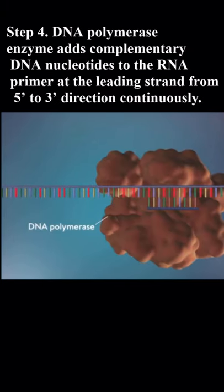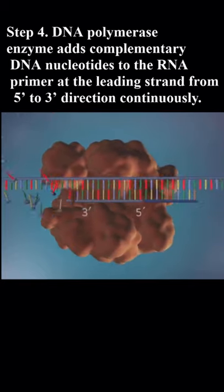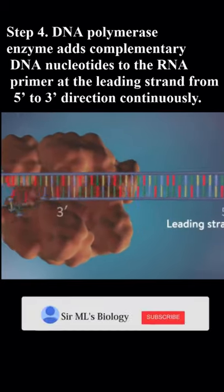Step 4. DNA polymerase enzyme adds complementary DNA nucleotides to the RNA primer at the leading strand from 5' to 3' direction continuously.